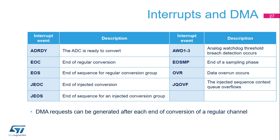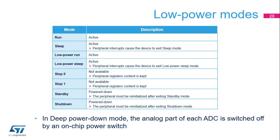DMA requests can be generated at each end of conversion when the ADC output data is ready. The ADCs are active in run, sleep, low power run, and low power sleep modes. In stop zero and stop one mode, the ADCs are not available, but the contents of their registers are kept. In standby or shutdown mode, the ADCs are powered down and must be reinitialized when returning to a higher power state. There is a deep power down mode in each ADC itself, which reduces leakage by turning off an on-chip power switch.